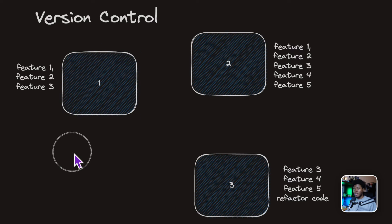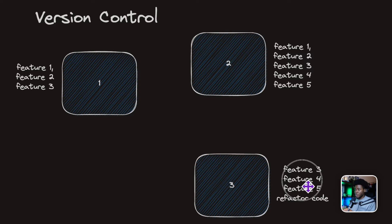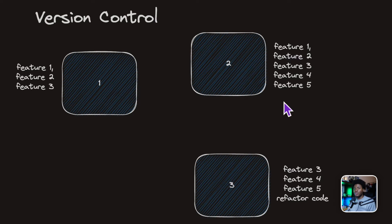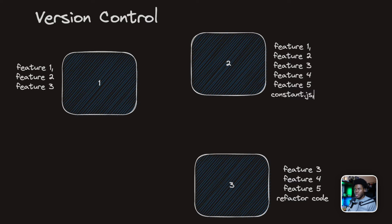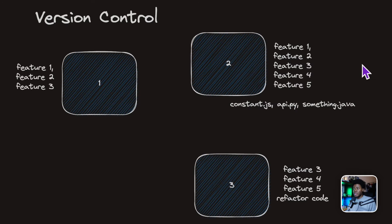What you have now are different versions of your project. Feature one, two, and three contained changes in certain files. When you had version two, it also contained new changes. And version three also has changes. Tools like Git are called a version control system because they allow you to track the changes introduced in these different versions. For example, with Git you can see that in version two, the files that changed were constant.js, api.py, something.java.